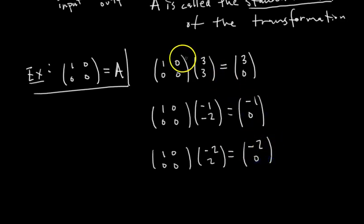So hopefully you can see, whatever vector we input, what happens to it is it just loses the Y component. It loses the second component. Geometrically, we can think about this transformation as well. So if we input the vector 3, 3, what do we get as the output? We get the vector 3, 0.